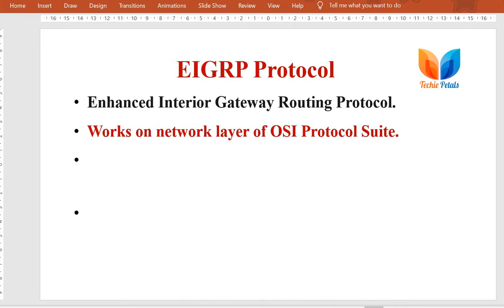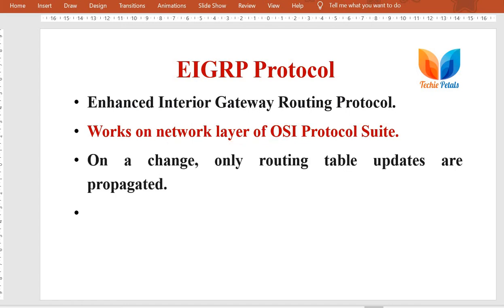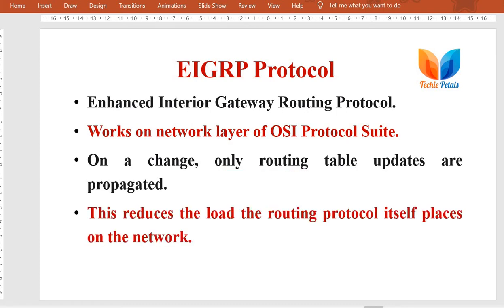EIGRP works on the network layer of the OSI protocol suite. The key difference here is that only updated information is propagated among the neighboring routers — they are not circulating complete routing tables to their neighbors. This makes routing faster and reduces the routing protocol's load on the network, so we can say it is a faster version of a dynamic routing protocol.